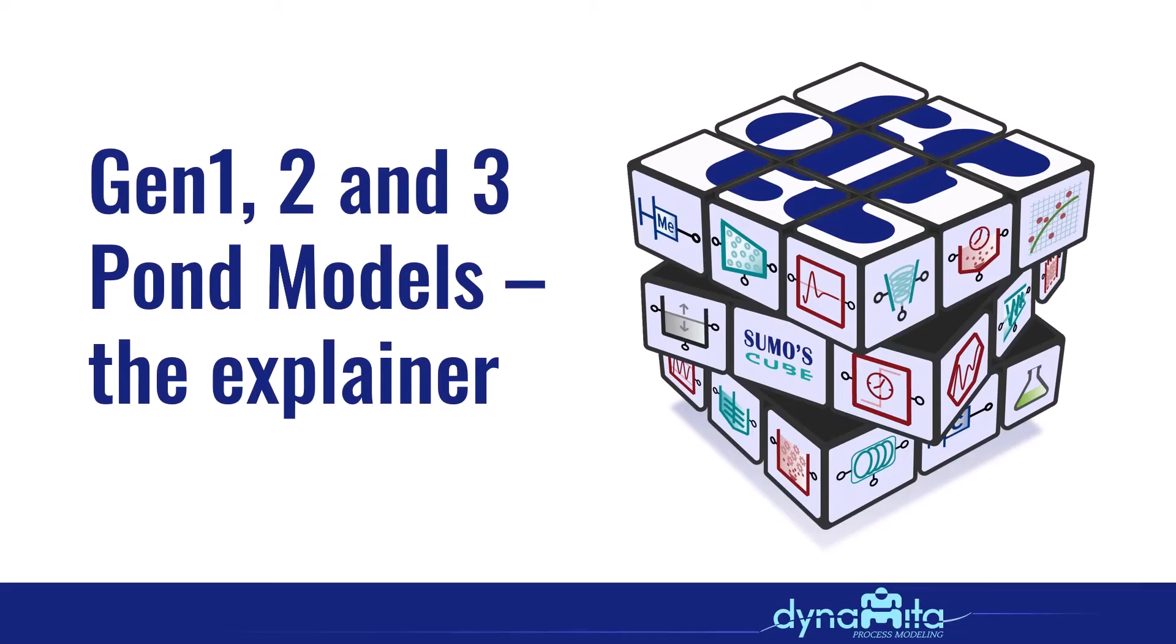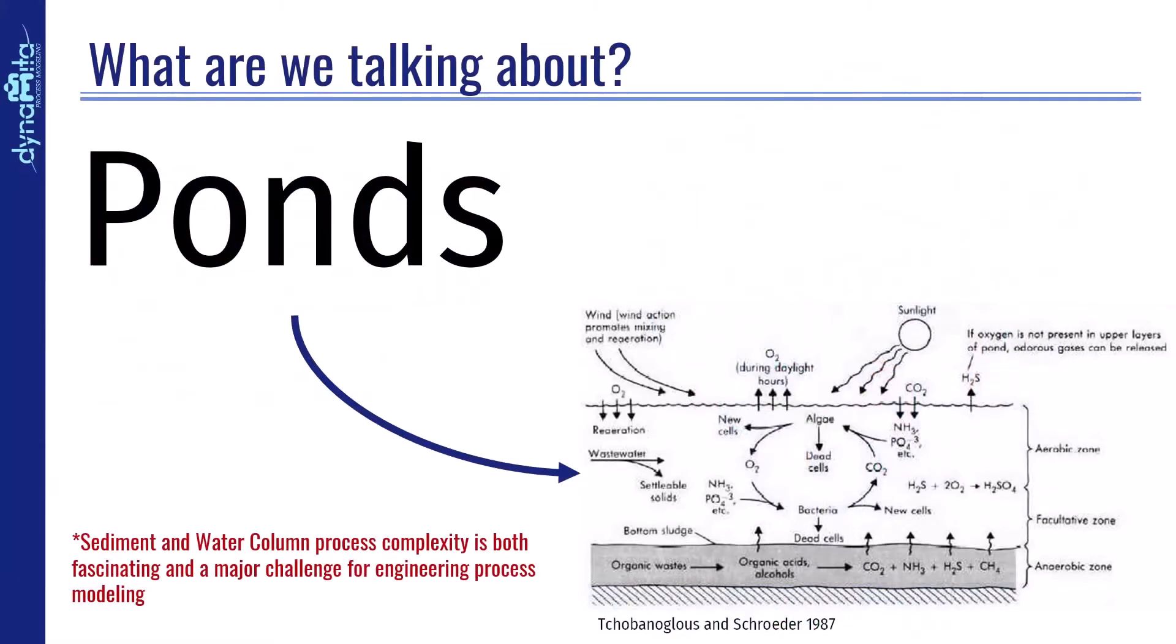Generation 1, 2, and 3 pond models. What do we mean by these terms? This is the explainer. What are we talking about? Ponds.